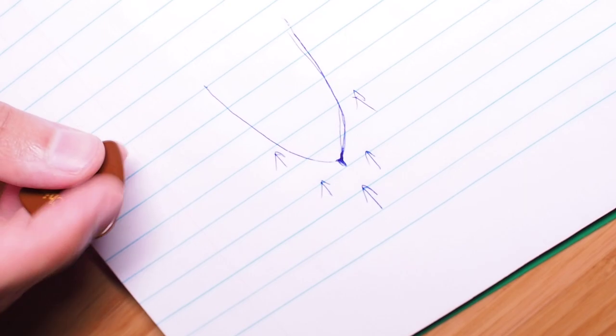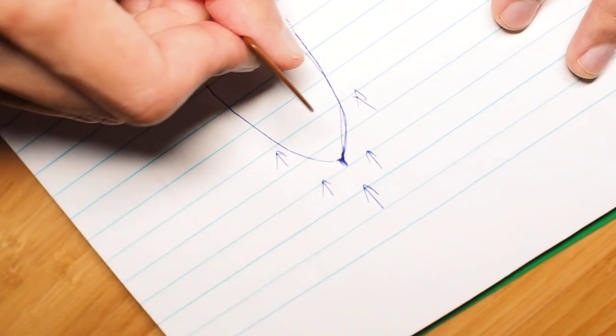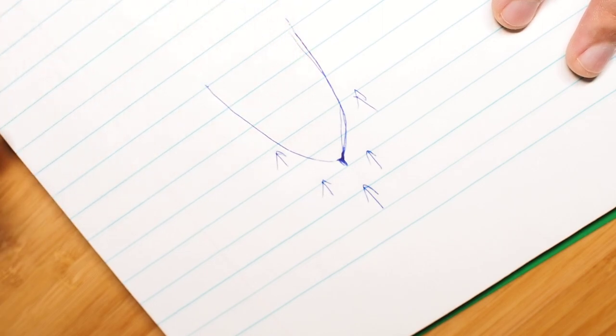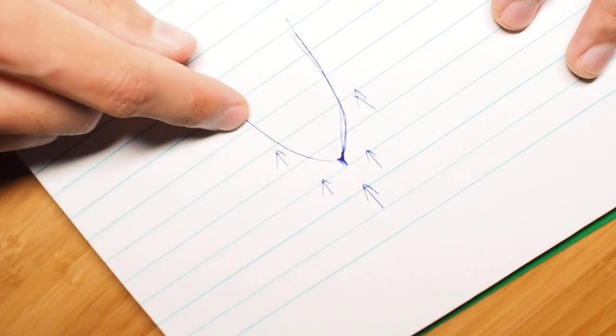So I made this little diagram here to show you basically what we're doing. What we're looking at here is like a profile of the pick's edge. So like this, right? And the idea is to sand, basically sand the entire thing down.